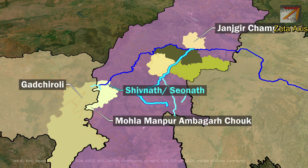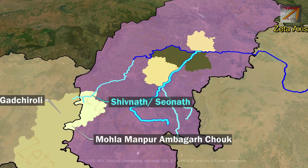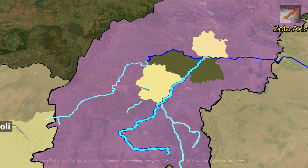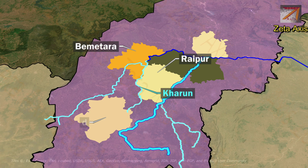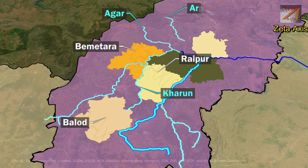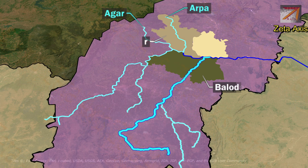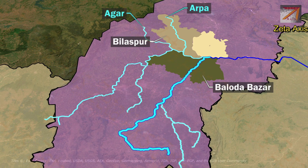After its origin, the Sionath river flows in a north-eastern direction. During its course, it is joined by Karun river on the border of Raipur and Bemetara district. The Karun river originates in Balud district of Chhattisgarh. Further, the Sionath river is joined by Agar river and Arpa river on the borders of Baludabazar and Bilaspur. The Sionath river ultimately joins Mahanadi river in Janjagir Champa district.